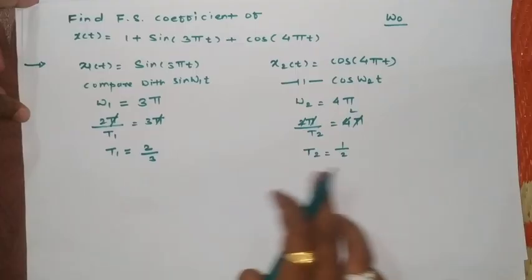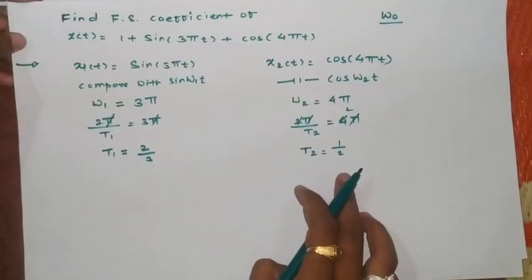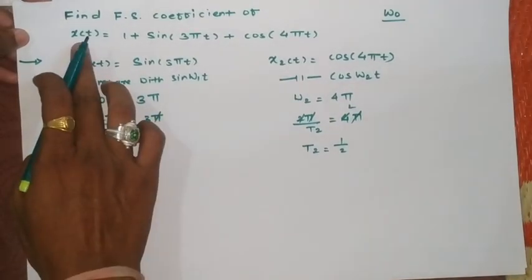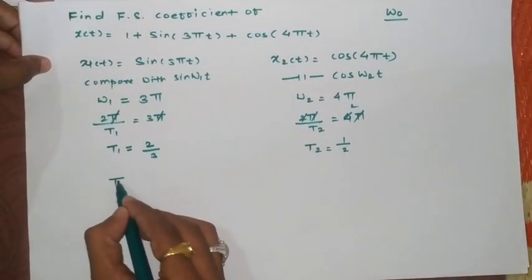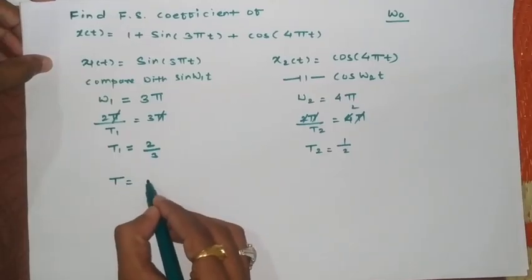Now once you got T1 and T2 we will try to find the total time period of the function x(t). Now in this case as you know the total time period should be a rational number.